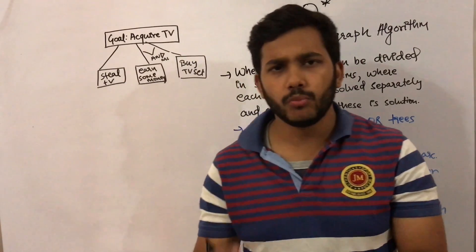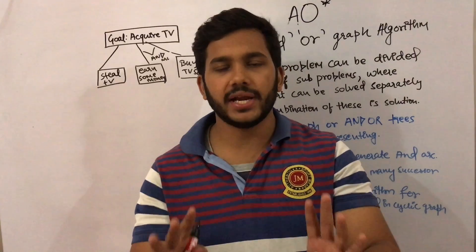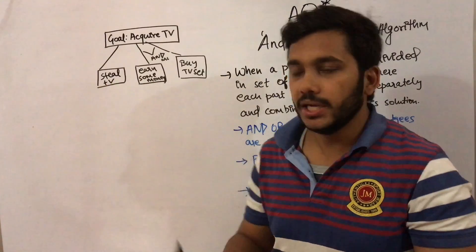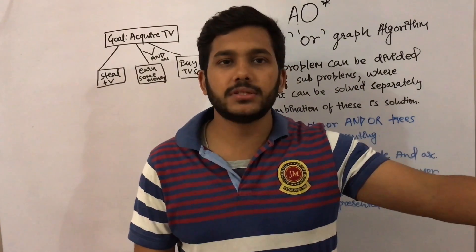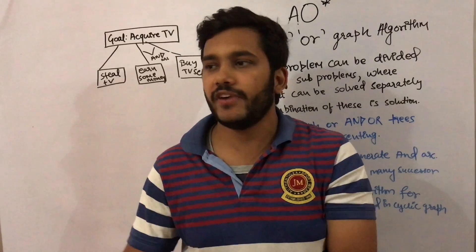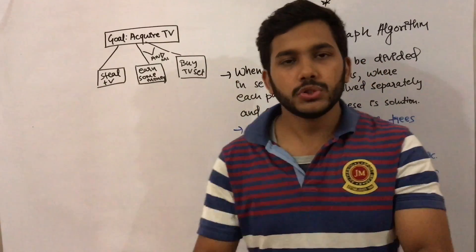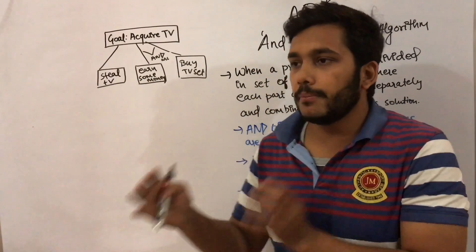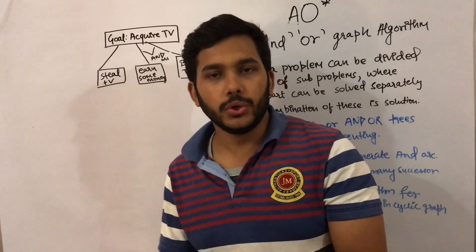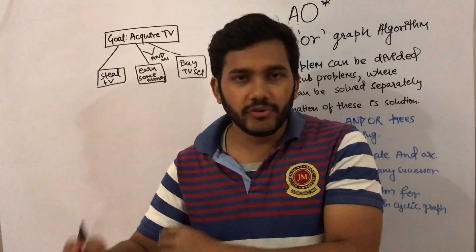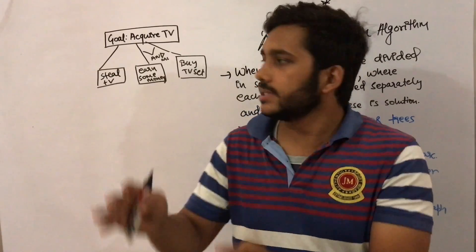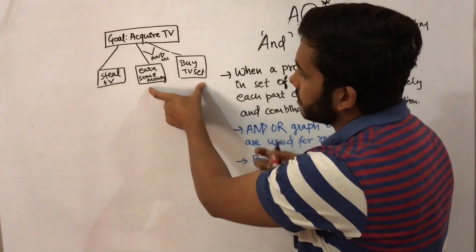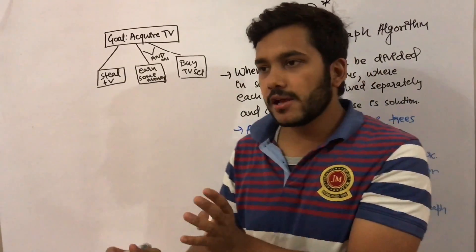To understand when to use AO*, consider this example: suppose you want to acquire a TV — you want a TV set at your home. You have a first option: steal a TV. You can go to your friend's house or your neighbor's and steal a TV from them. Or, what you can do is earn some money first. You go for a job, earn some money, and then buy a TV set.